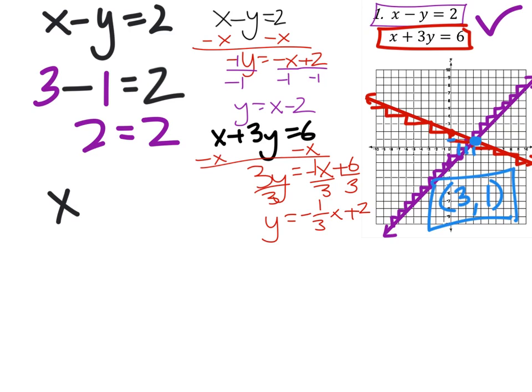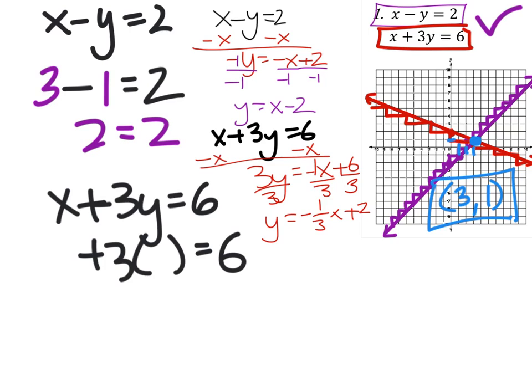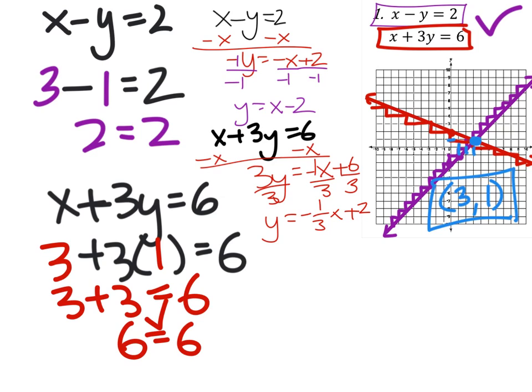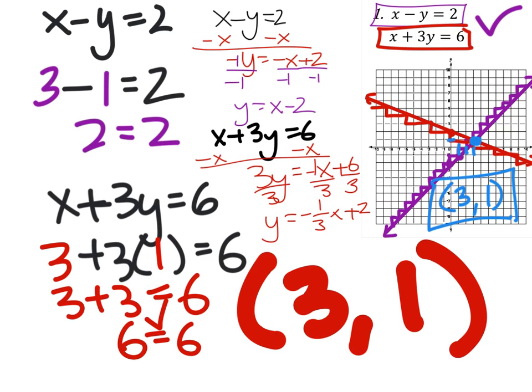Now let's try the red one. So x is 3, y is 1. So we have 3 plus 3 is 6. And 6 does equal 6 here. So as it turns out, the actual solution to this system, we were correct. It's 3, 1.